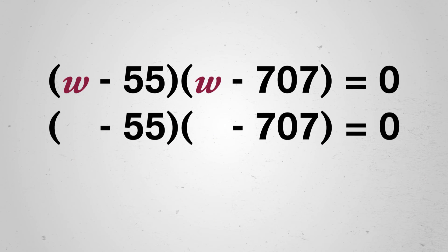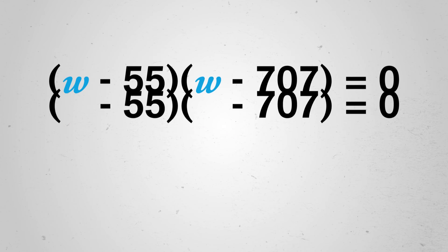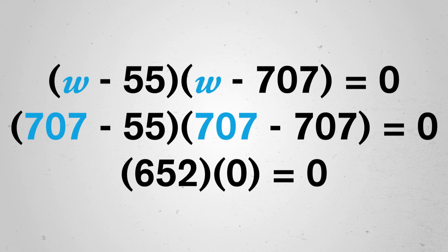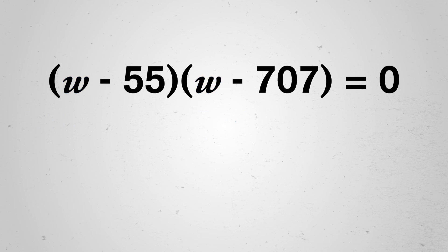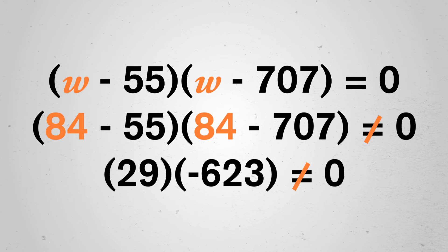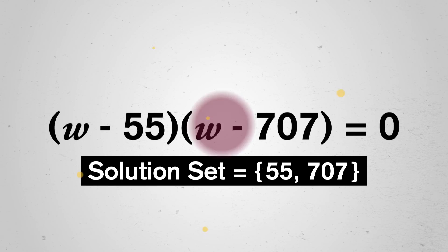Right away, we see that if w is 55, then the equation says 0 times something equals 0, which is true, because anything times 0 is 0. The same thing happens if w is 707, then the equation reads something times 0 is 0, which is also true. Both the values 55 and 707 make this a true sentence, but nothing else will. Stick in any other number for w, and neither term will be 0. So our solution set, a list of all possible values that make our equation true, is 55 and 707.